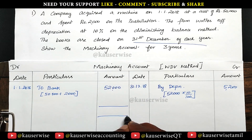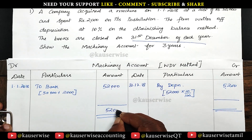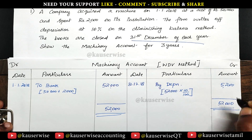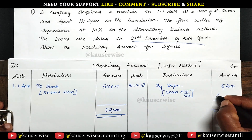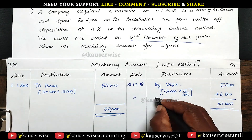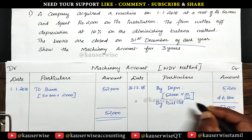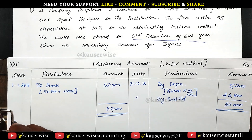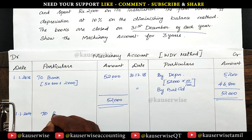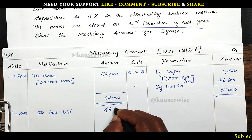Get the total and find out the balancing figure. 52,000 minus 5,200 gives 46,800. This is the closing balance. Same date — by balance carry down.